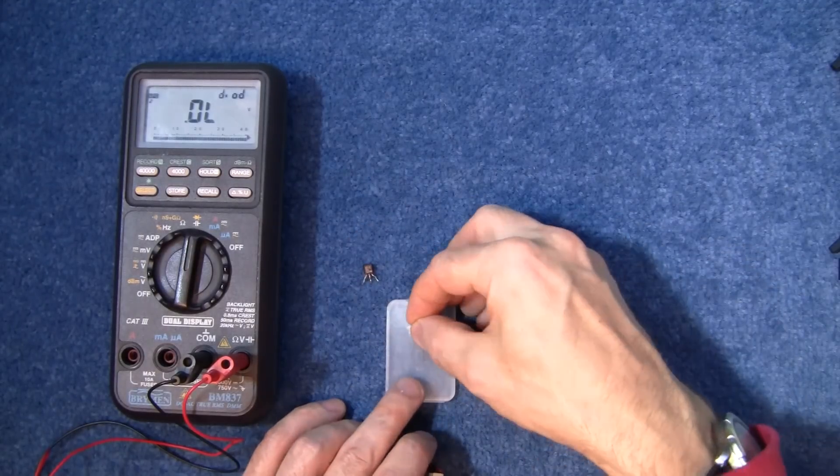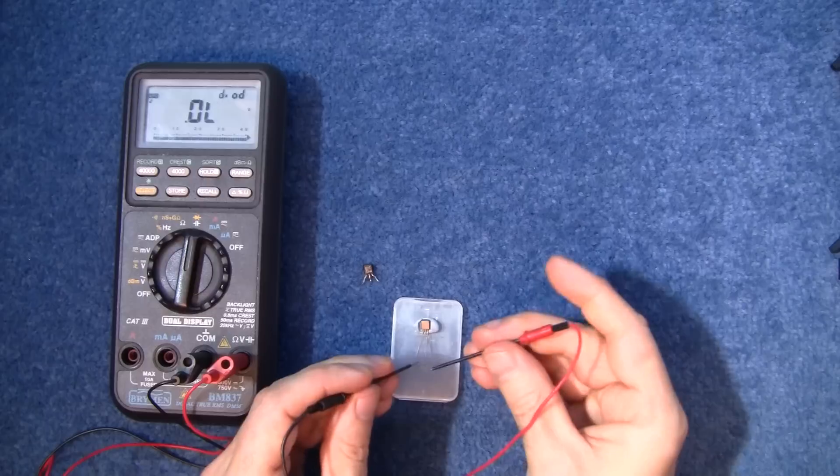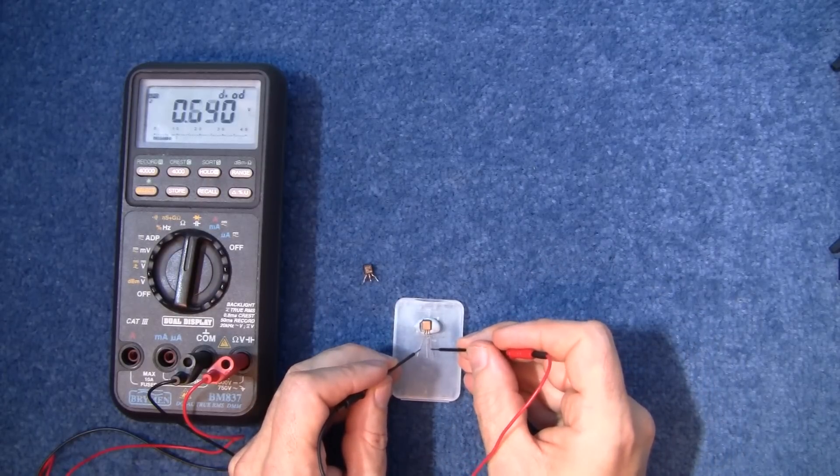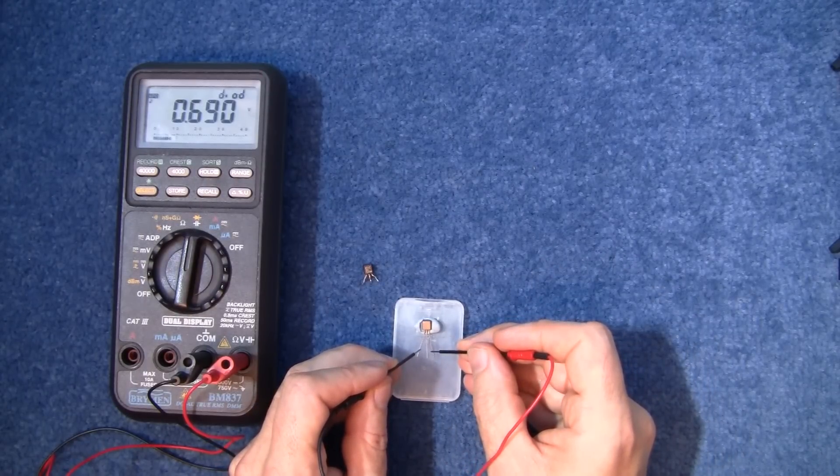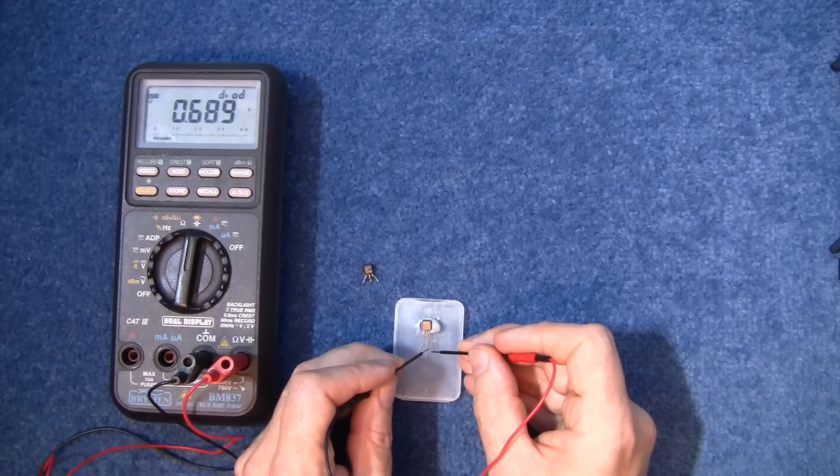So now I'll get a new transistor and do the same thing, check between those two, those two. Aha, now we have a reading. So if I move that one over we have a reading there as well.